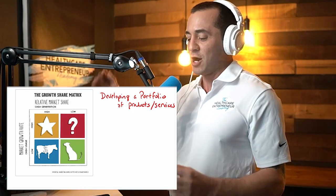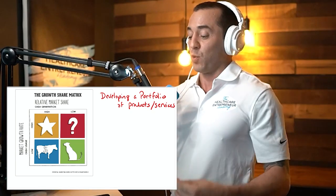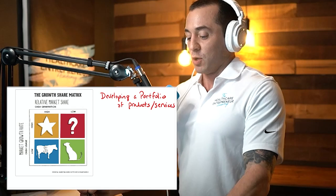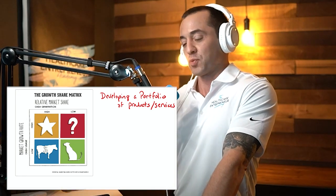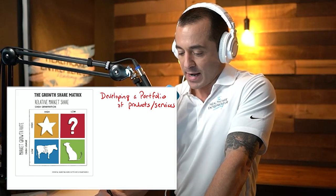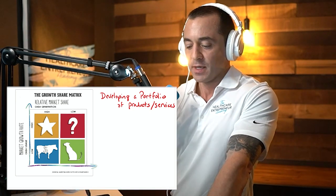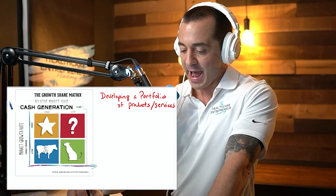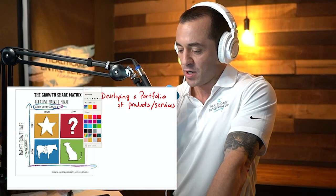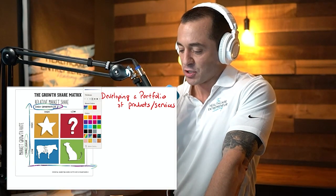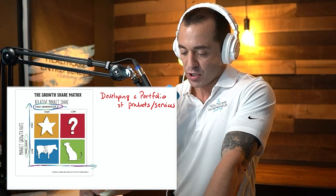We're going to use this to help us figure out how to develop a portfolio of products or services, or in some cases, if you're a huge holding company, a portfolio of subsidiary companies. For our case, we're working through this matrix to think through the process of creating or adding additional products or services. This is basically a four-quadrant graph. The X axis represents cash generation and the Y axis represents cash usage, and that determines how a product falls on the plot.